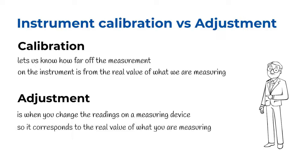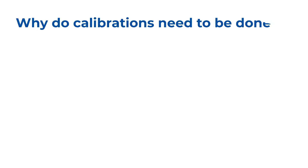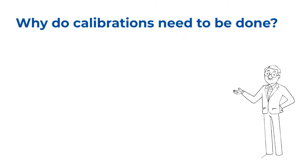Adjustment is when you change the readings of a measuring device so it corresponds to the real value of what you are measuring. This is usually done after calibration.